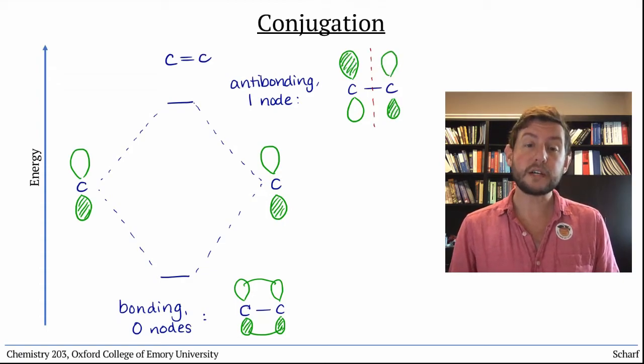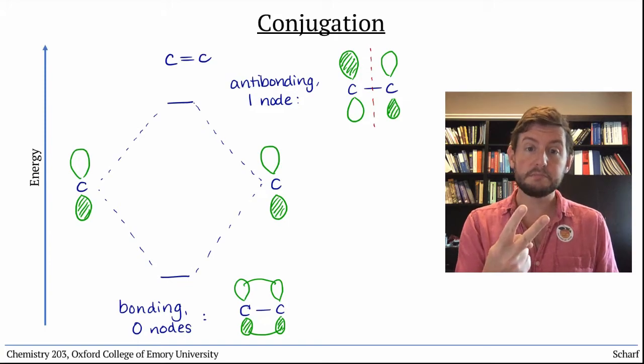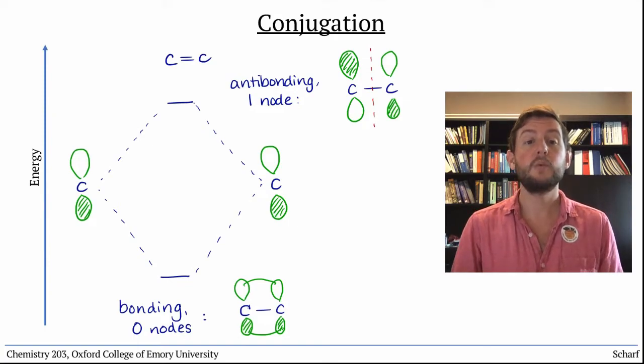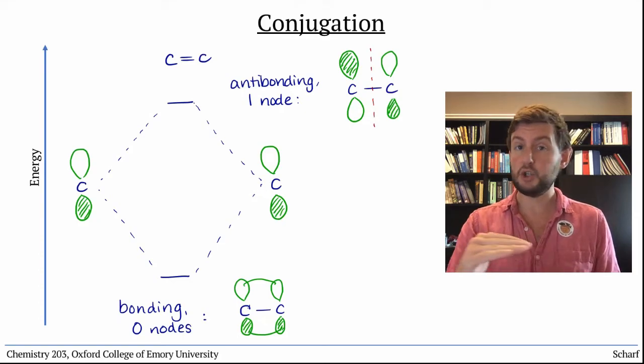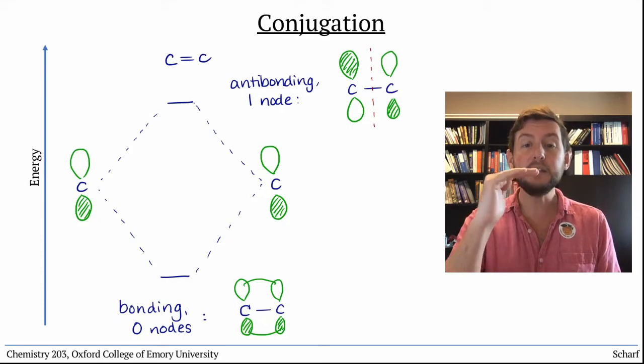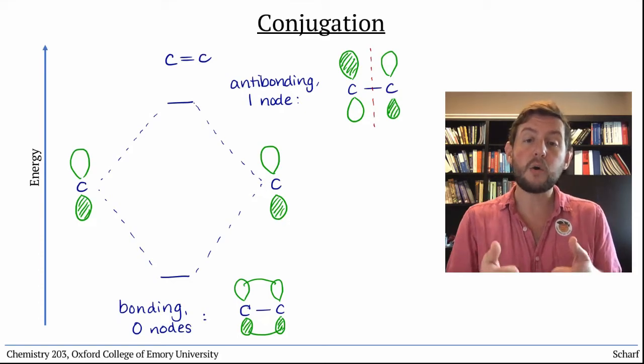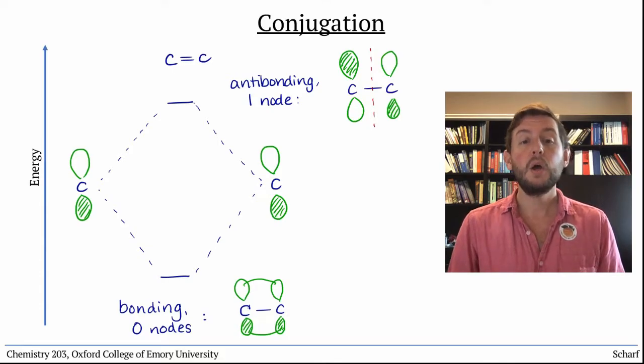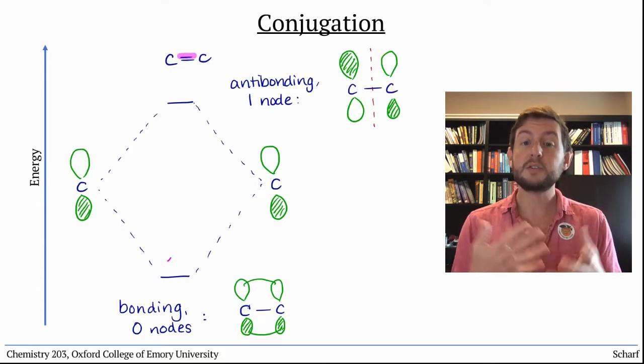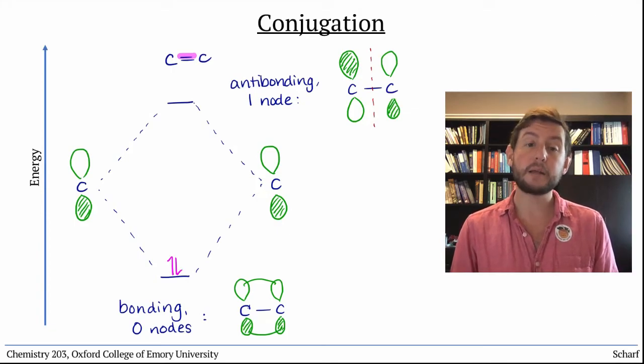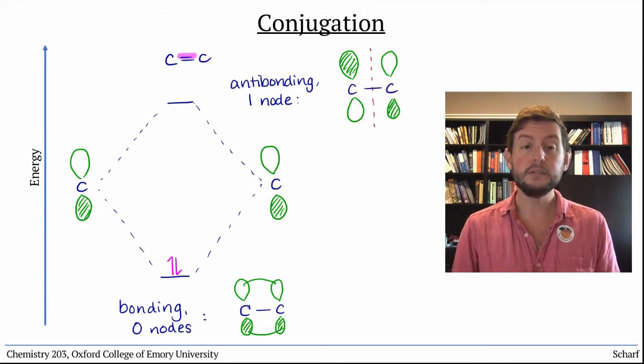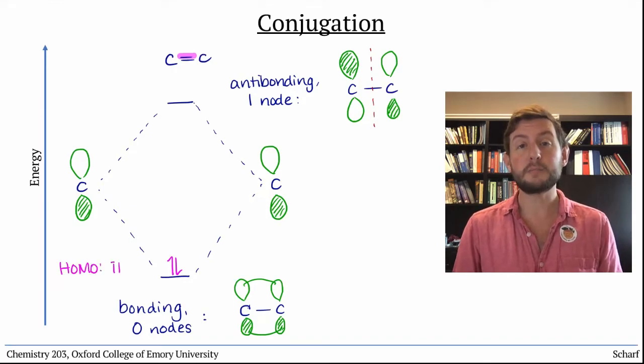We started with two atomic orbitals and we got two new molecular orbitals, with the lowest energy orbital having no nodes and increasing in the number of nodes as we go higher in energy. We know that there are two electrons in the bond, so we populate these orbitals from the bottom up. The HOMO is pi-cc, and the LUMO is pi-star-cc.